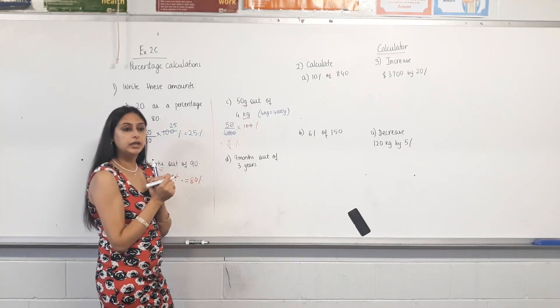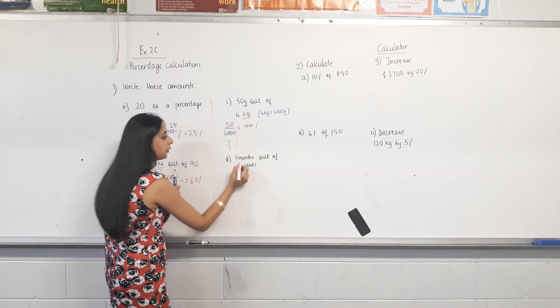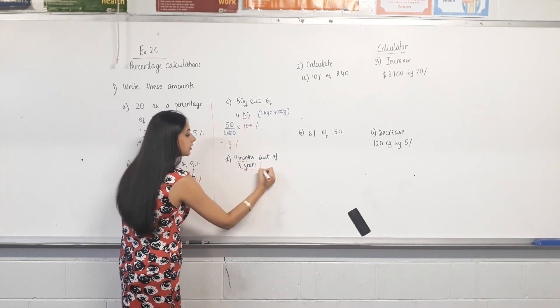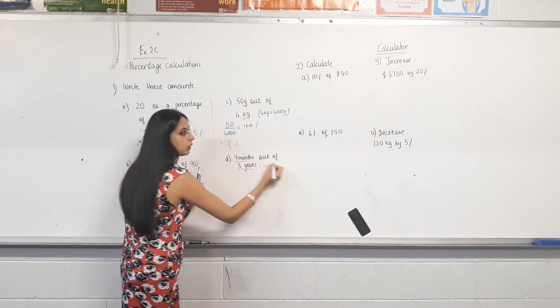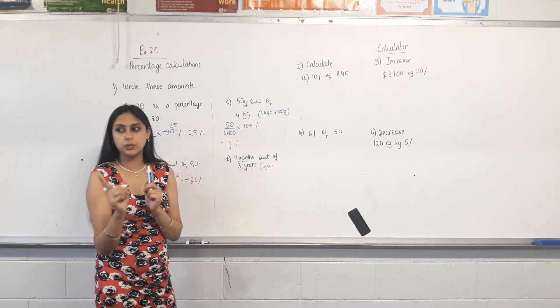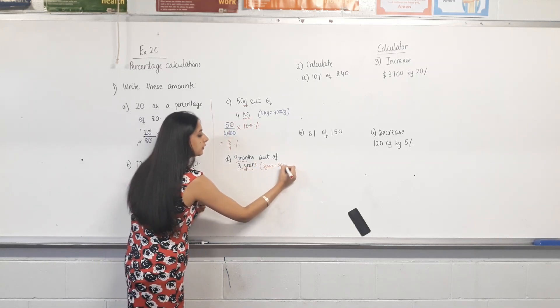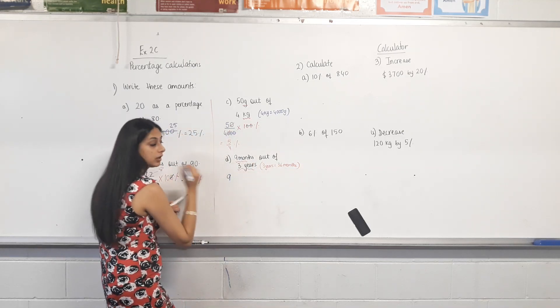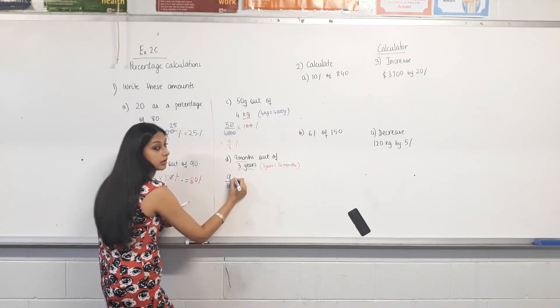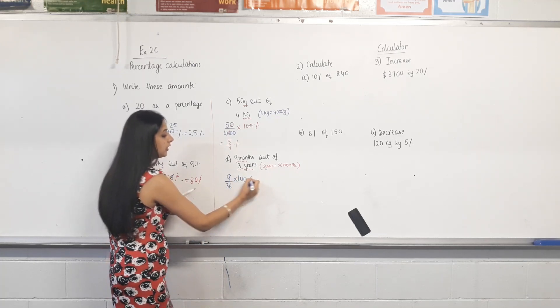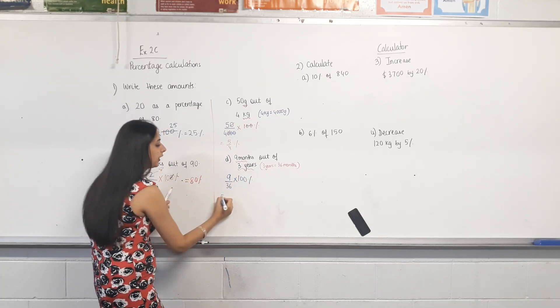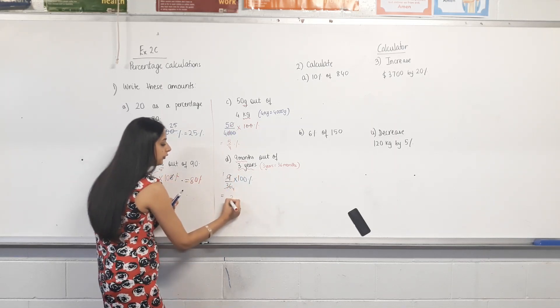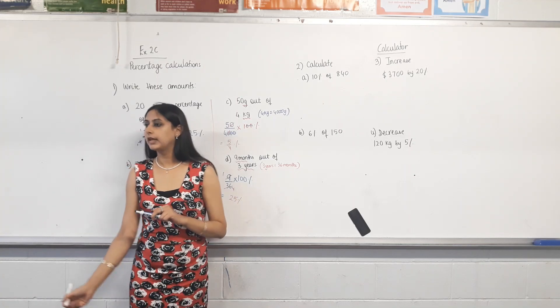Nine months out of three years. So, no, they're different units. Three years is how many months? One year is 12 months. Three years is 36 months. So, nine months out of 36 months, that's a fraction. We times it by 100 to get a percentage. 9 and 36, they're both divisible by 9. And then 100 over 4 is 25. 25%. Happy?